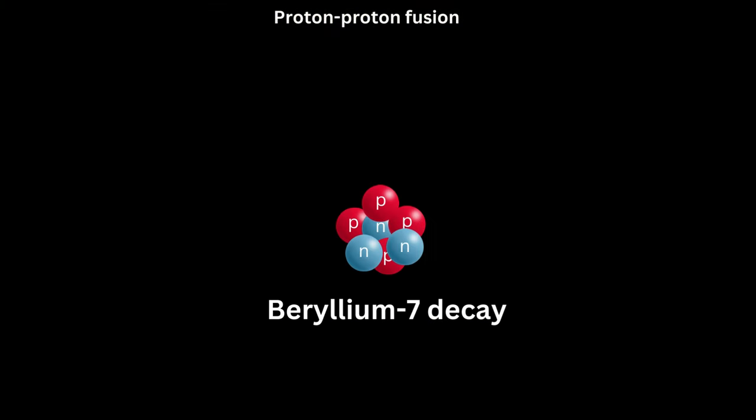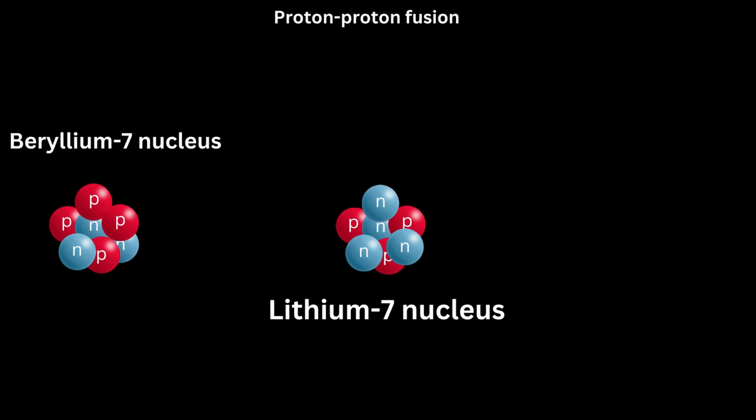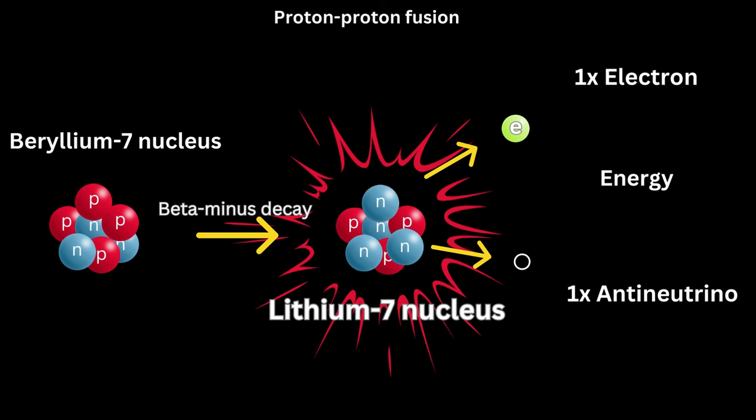Four: Beryllium-7 decay. A lithium-7 nucleus, which is three protons and four neutrons, is created when the beryllium-7 nucleus experiences beta minus decay. An electron, an anti-neutrino, as well as some energy are released in this process.